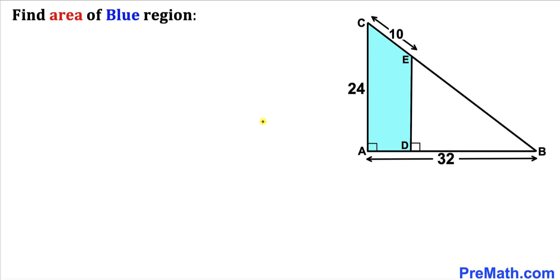Welcome to pre-math. In this video we have got this right triangle ABC, as you can see in this diagram, such that its side lengths are 32 and 24 units. Moreover, this line segment CE is 10 units, and now we are going to calculate the area of this blue shaded region.